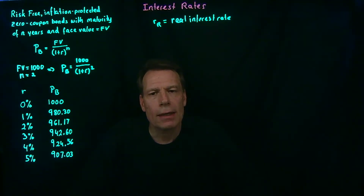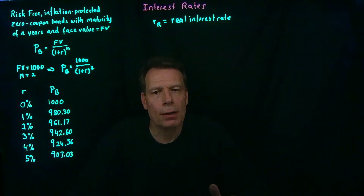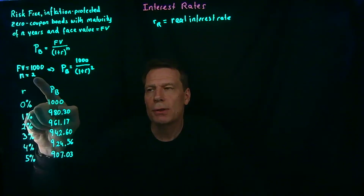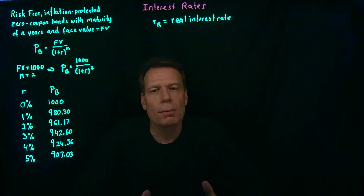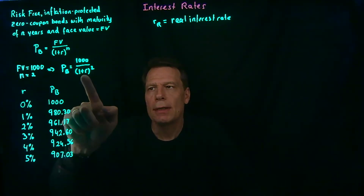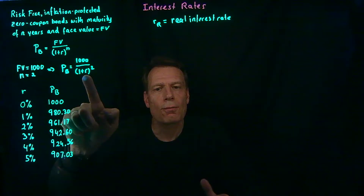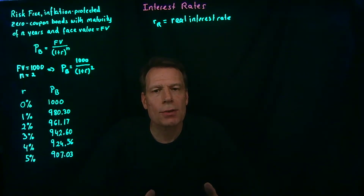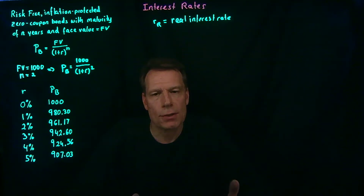If we now have a risk-free, inflation-protected, zero-coupon bond with a face value of $1,000 and a maturity of two years, the formula tells us that the price of that bond equals the $1,000 face value divided by 1 plus the real interest rate squared. Once we have that formula, we can derive a table that shows the relationship between the real interest rate and the prices for such bonds.